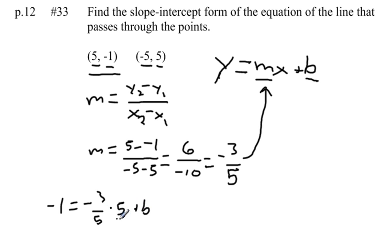First of all, to multiply these fractions, we can think of this 5 as 5 over 1. To multiply, I can cancel the 5s out first and I can say negative 1 equals negative 3 plus b. Now if I add 3 to both sides, that gives me, I'll bring it over here, 2 equals b.